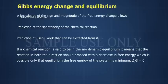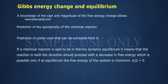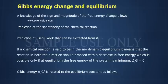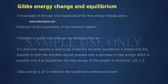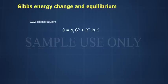If a chemical reaction is said to be in thermodynamic equilibrium, it means that the reaction in both directions should proceed with a decrease in free energy, which is possible only if at equilibrium the free energy of the system is minimum — that is, ΔRG equals zero.